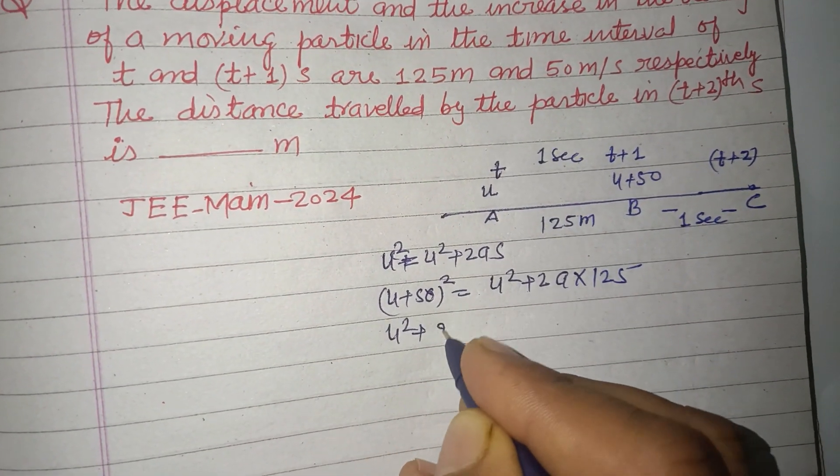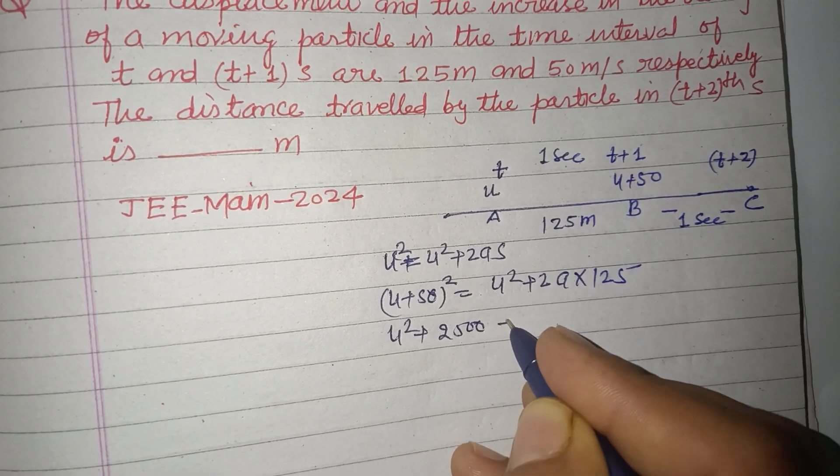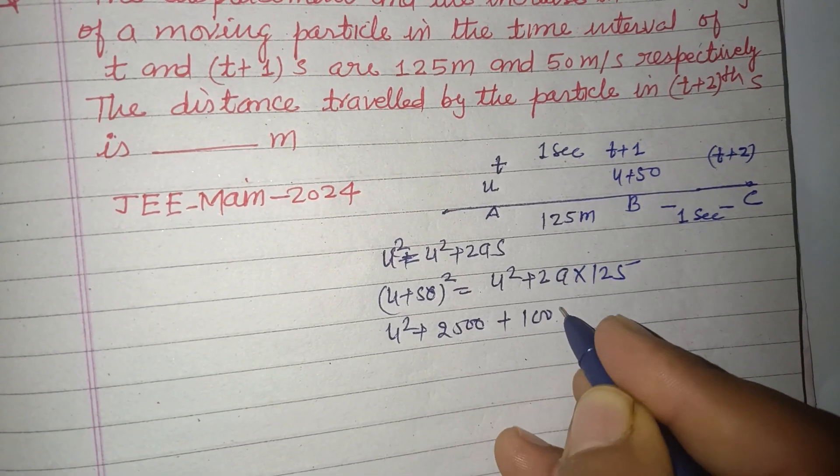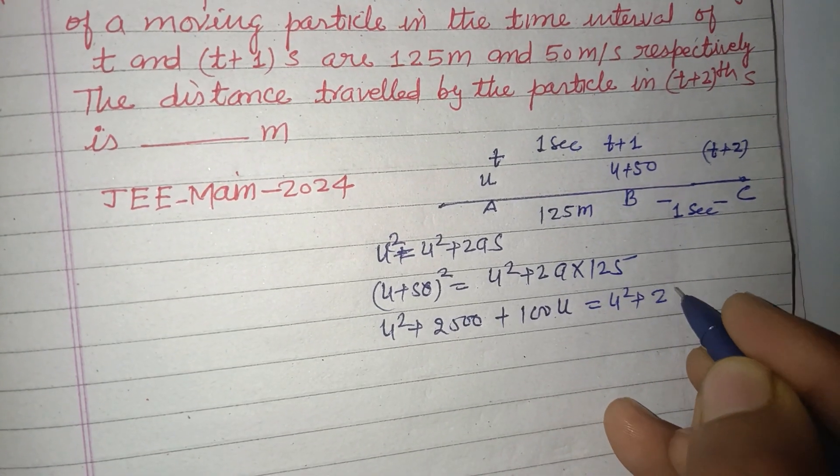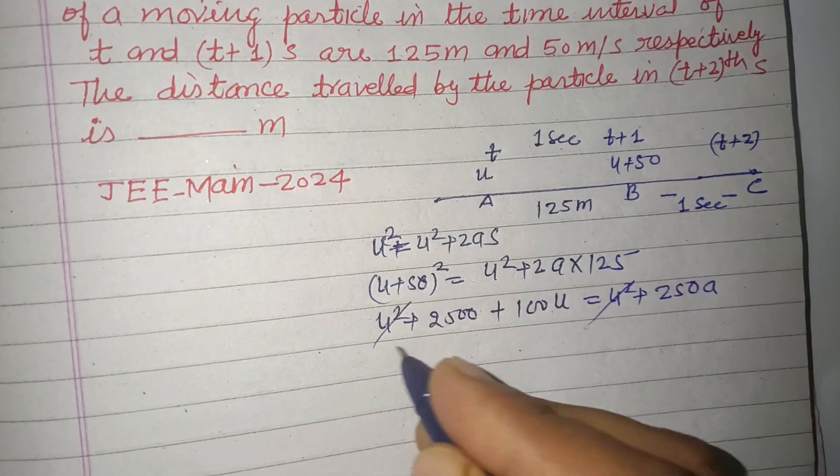So u² + 2500 + 100u = u² + 250a. The u² terms cancel.